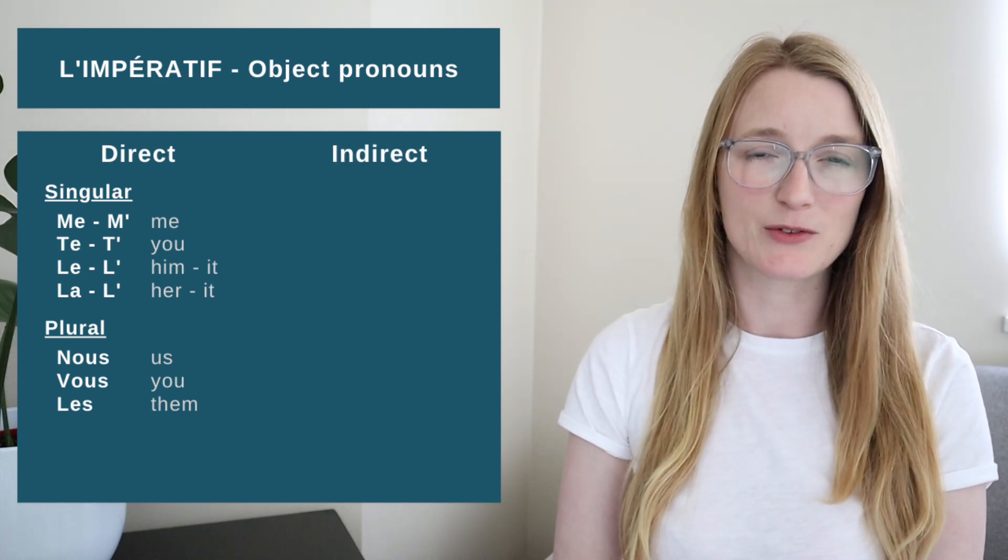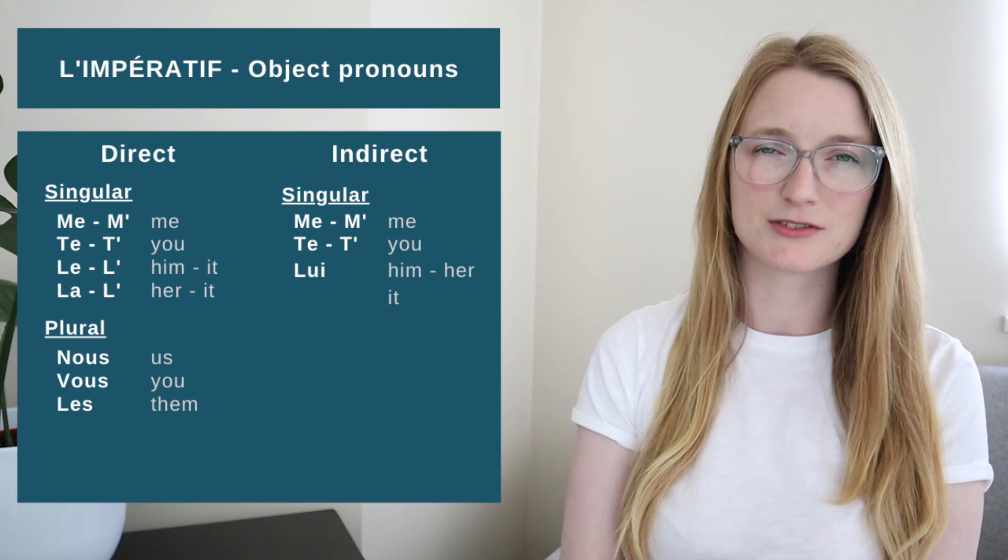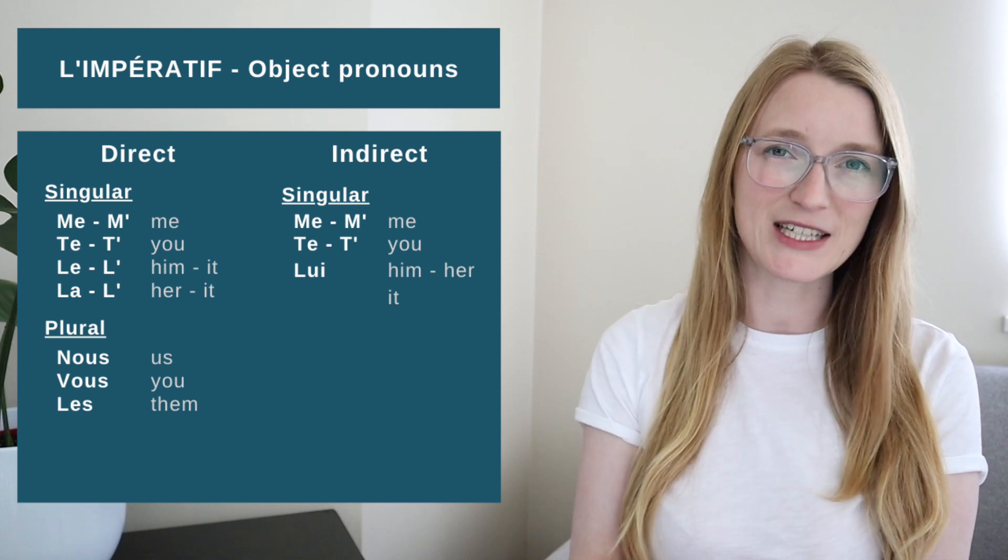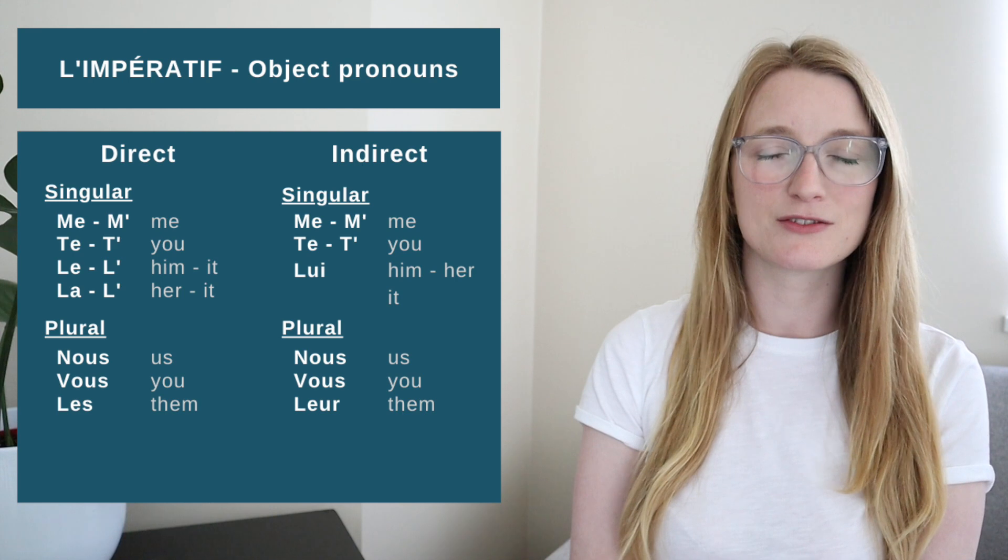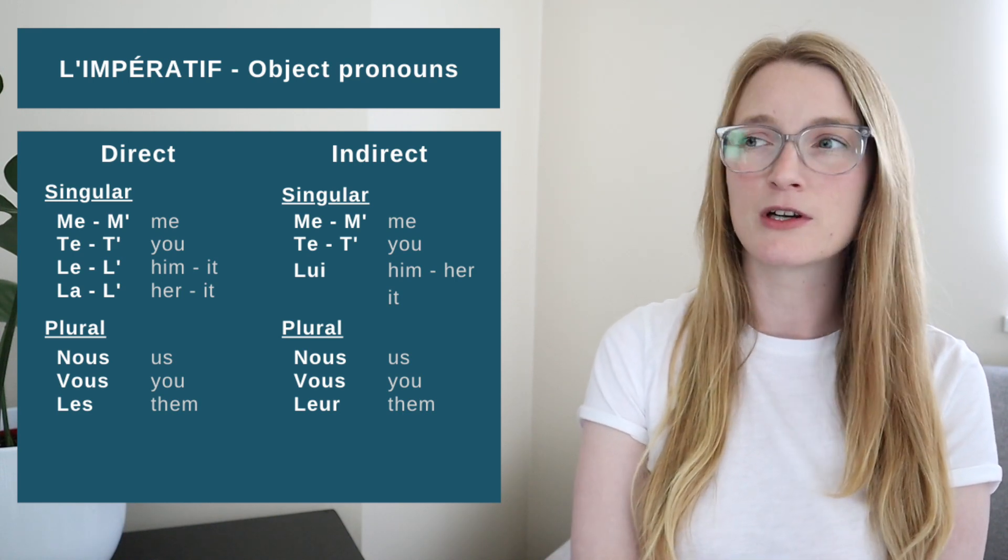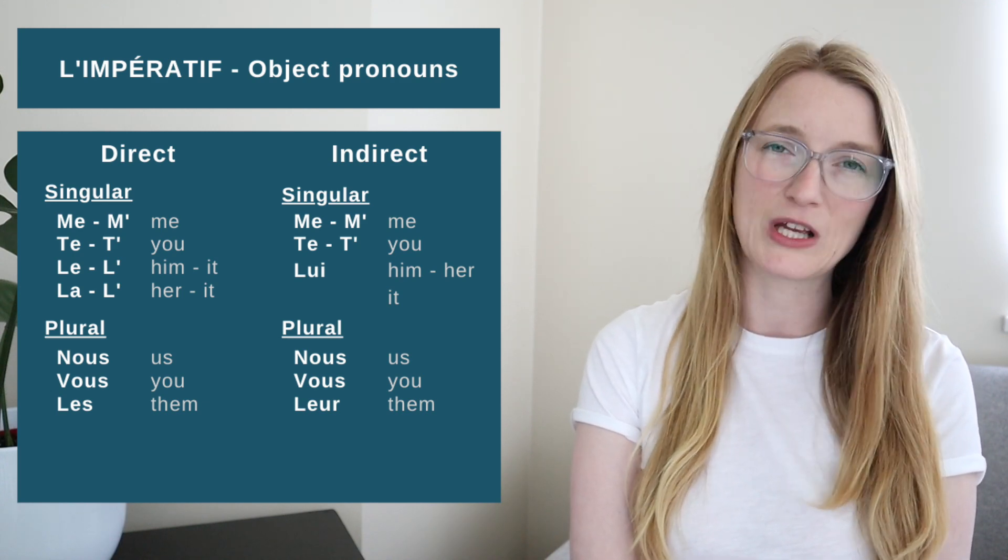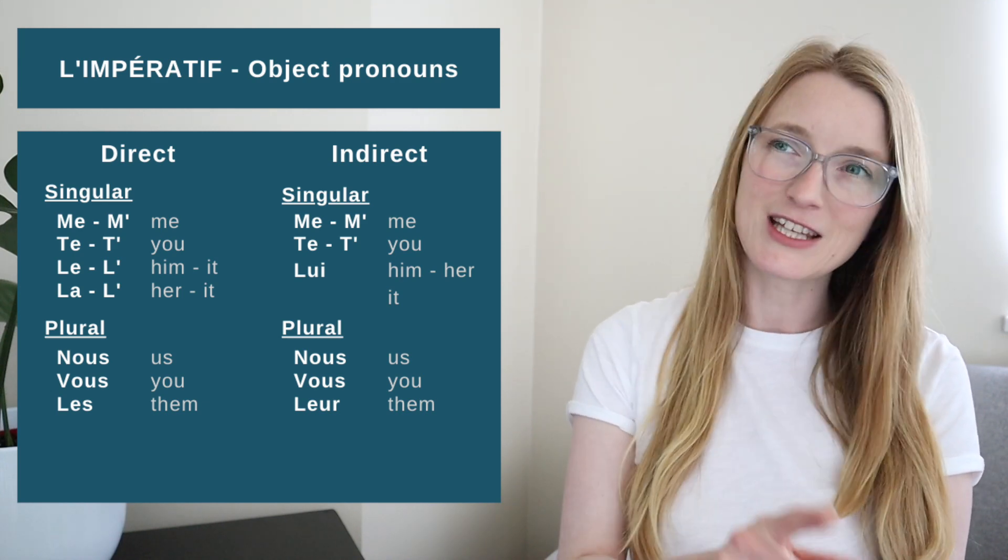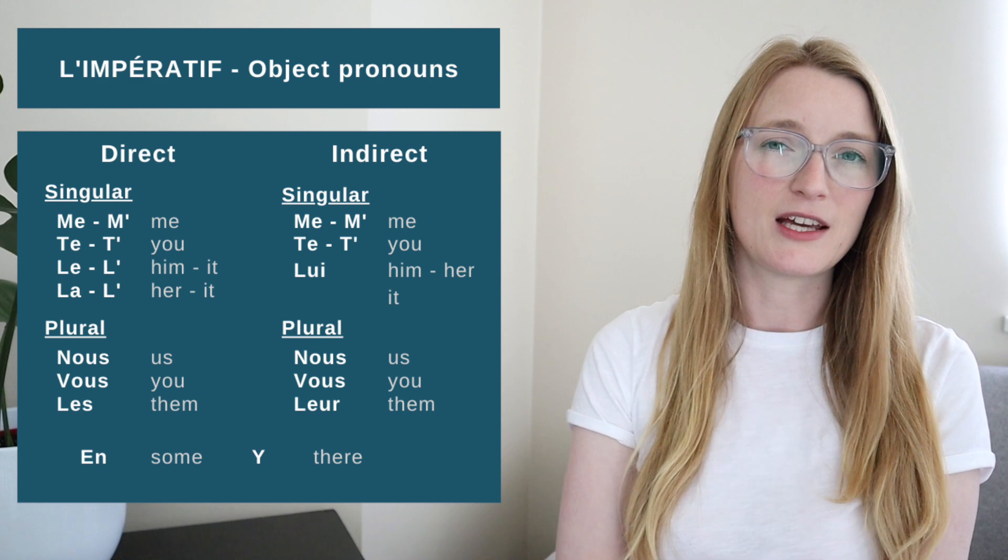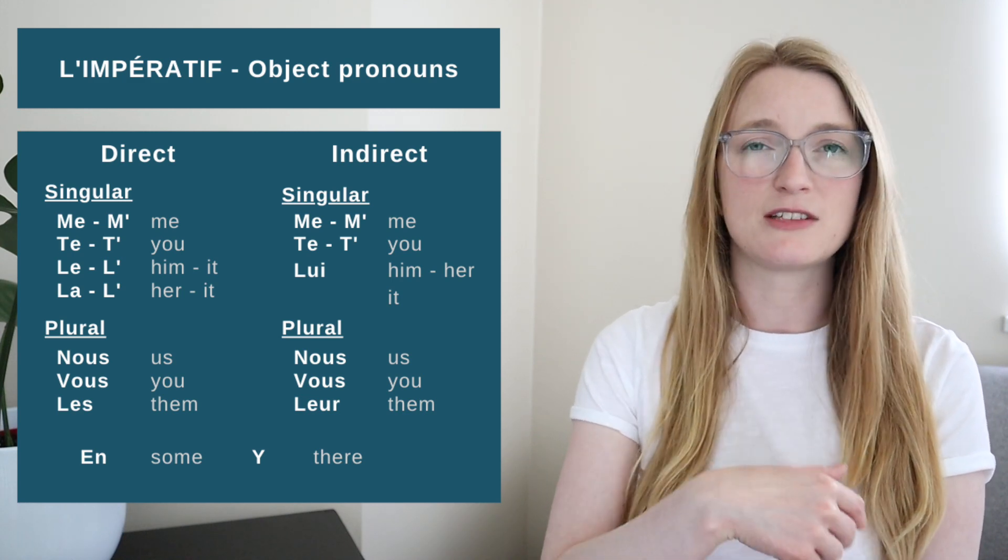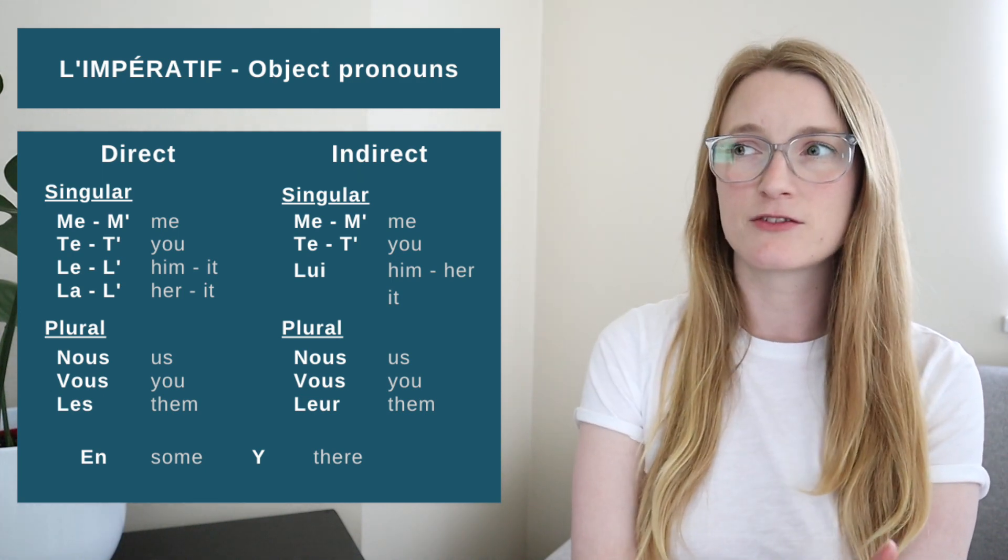Then we have the indirect object pronouns. We have Me or M apostrophe for me. Te or T apostrophe for you. Lui for him, her or it. Nous for us. Vous for you. And leur for them. We are not going to come back on the grammar in this lesson. But remember that to get a direct object pronoun, we're going to ask the questions Qui, quoi? And for indirect, we are going to ask the question À qui, à quoi? And the third type of pronoun that we have is En, which translates to some. And then Y, which always refers to a place.